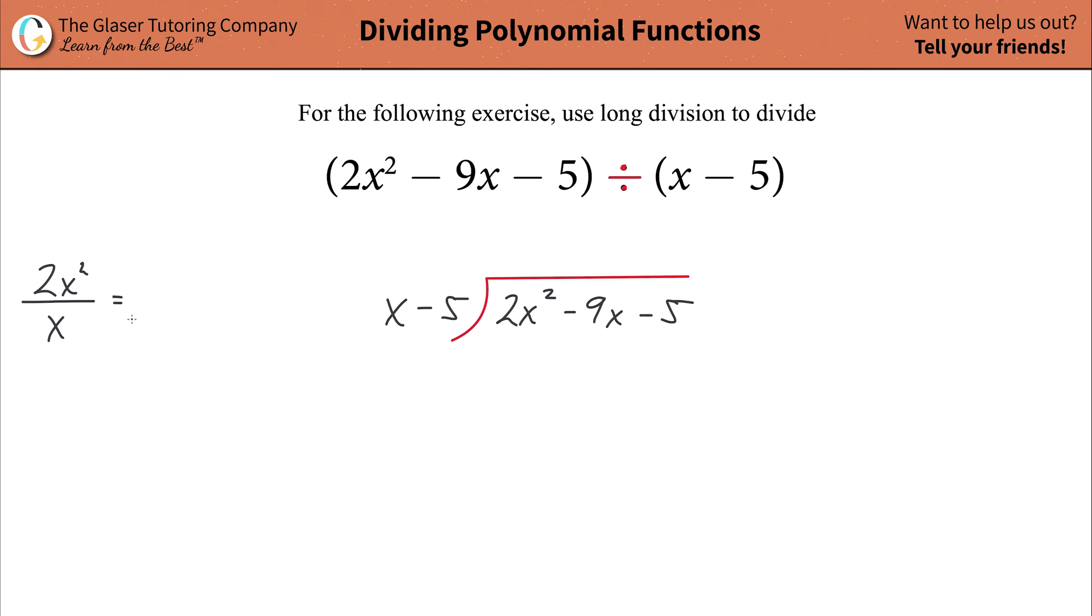In other words, you're going to take the highest power of x in the dividend 2x squared and divide it by the highest power of x in your divisor which is x. Now when you do this math, you know this is x squared, this is x, so that's just going to simplify down to 2x. Good. This is the value you're going to now put in above your long division symbol. So it's going to be 2x.